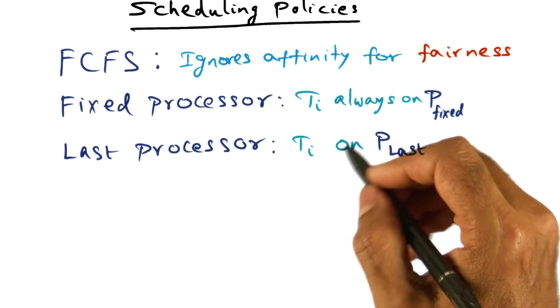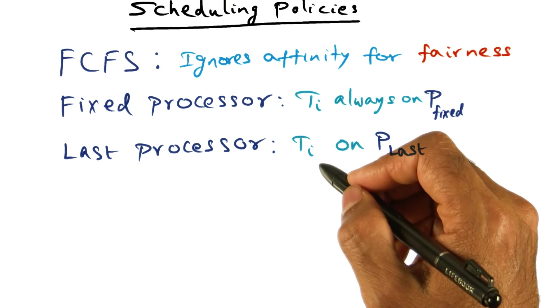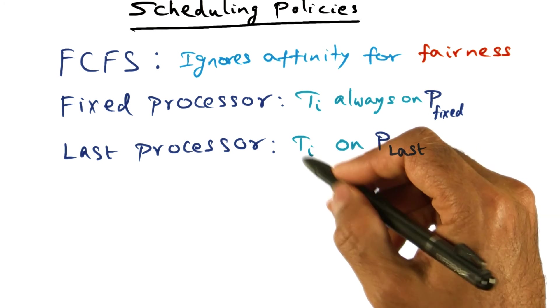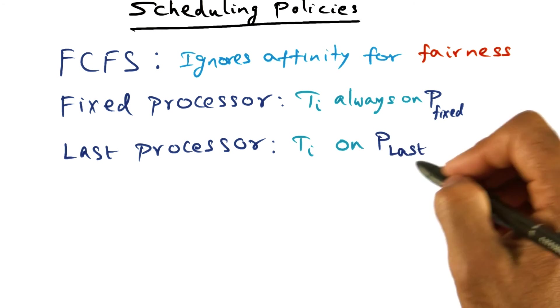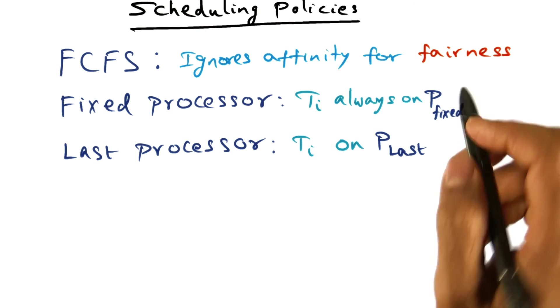The idea behind this is that you want to make sure that if this processor is going to pick a thread to run on it, the likelihood of this thread finding its memory contents in this processor is high. That's what we're trying to shoot for in this Last Processor policy.